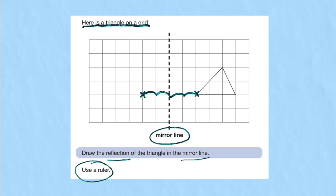Now I can do that to another corner. Let's do this top one. And I'll work out that it's one, two, three, four squares from the mirror line. So I'm going to have to go one, two, three, four squares from the mirror line on the other side.